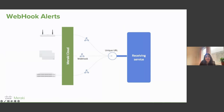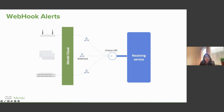Meraki webhooks are a powerful and lightweight way to subscribe to alerts sent from the Meraki cloud when something happens. They include an API-style message in machine and human-readable JSON and are sent to a unique URL where they can be processed, stored, or used to trigger automation. In this diagram, various Meraki products are connected to the cloud. When you configure webhooks, you can customize them to send alerts based on events to your receiving service — which could be Slack, Webex Teams, or other applications — and take necessary actions based on those alerts.